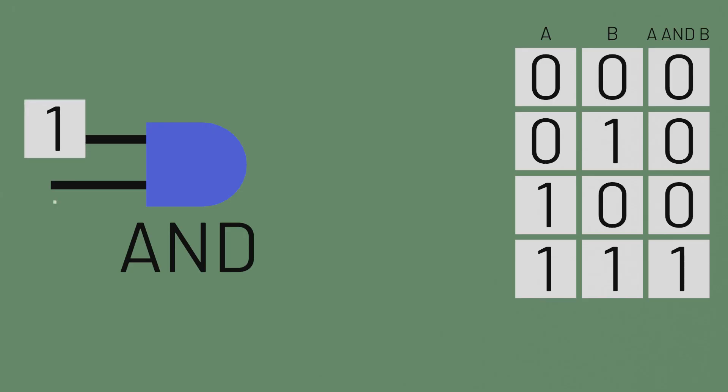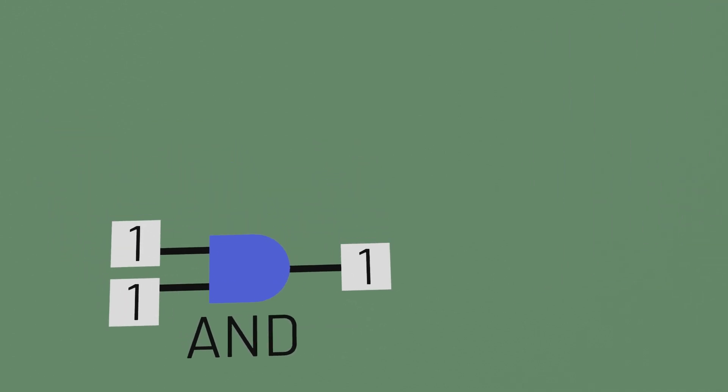One final gate that will prove useful to us is the AND gate. The AND gate takes two inputs, and produces a 1 only when both inputs are a 1. Representing that kind of computation with dominoes feels tricky though. How could we design a domino output that falls only when both inputs also fall? Here though, we can again take advantage of falling dominoes' ability to halt the progress of other dominoes.